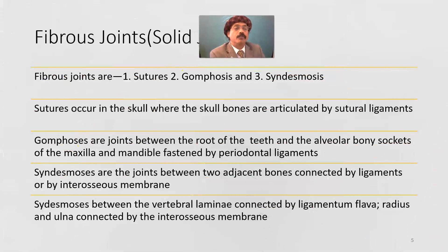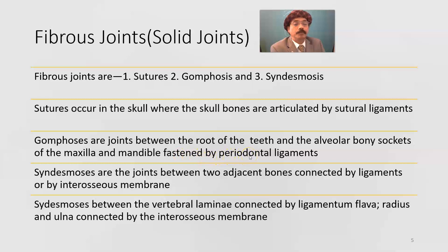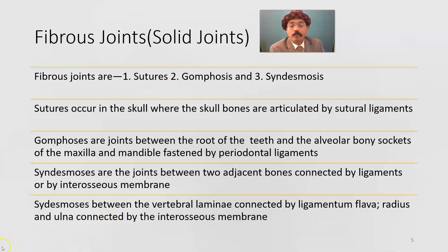Now fibrous joints — three types: sutures, gomphosis, and syndesmosis. Sutures occur in the skull where skull bones are articulated by sutural ligaments. Gomphosis are joints between the roots of the teeth and the alveolar bony sockets of the maxilla or mandible, fastened by the periodontal ligament. Syndesmosis are joints between two adjacent bones connected by ligaments or by interosseous membrane — for example, between the vertebral laminae connected by ligamentum flavum, and between the radius and ulna connected by the interosseous membrane.